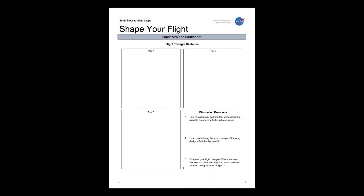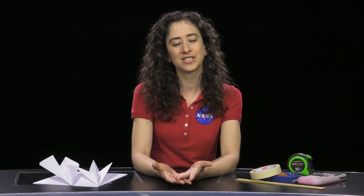Students will repeat launching their airplanes and completing the appropriate data tables two more times. To conclude the activity, have students compare their results and complete the discussion questions on page four, then determine their group's most accurate flight. Review the discussion questions as a group, and to take the activity a step further, repeat it allowing students to create their own paper airplane design and compare the results.